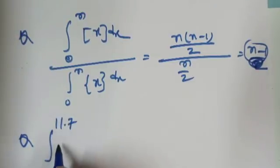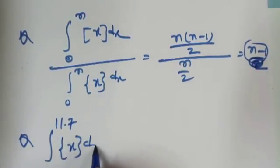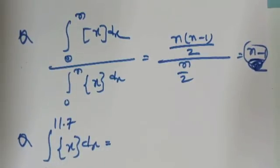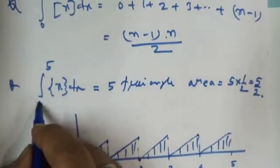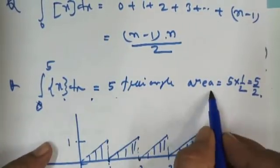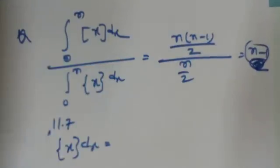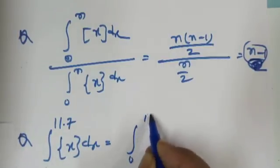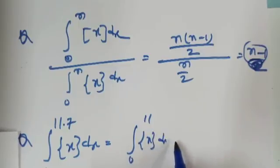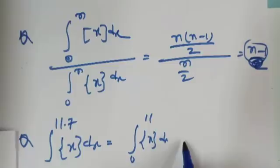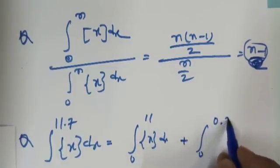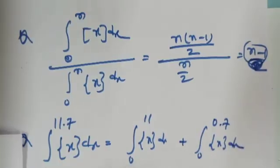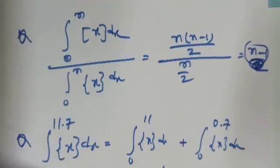Next question: integral from 0 to 11.7 of {x} dx. This is just 11 plus 0.7. For the integer part 0 to 11, the area is 11 triangles giving 11/2. Then we add the remaining area from 11 to 11.7.